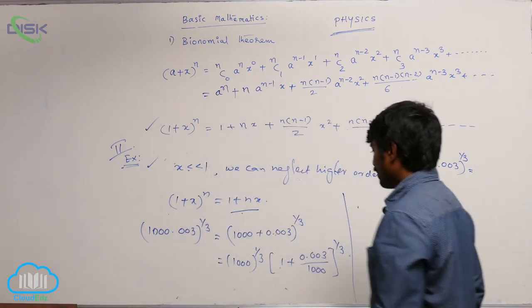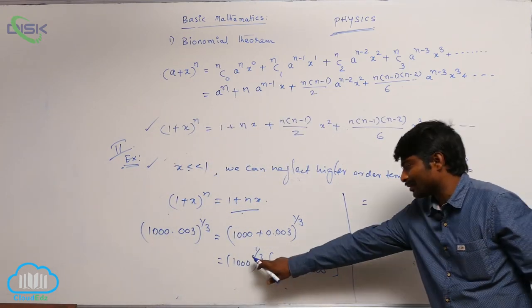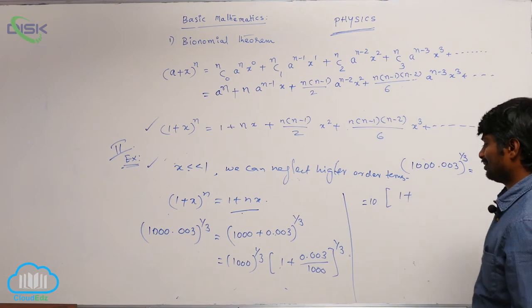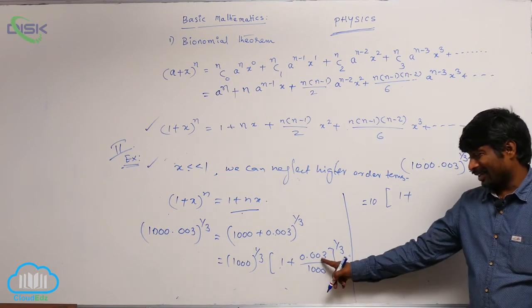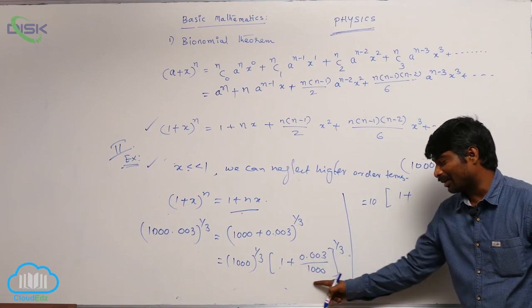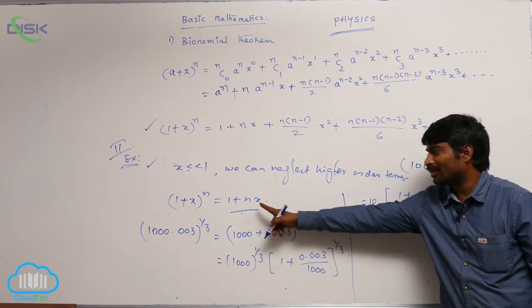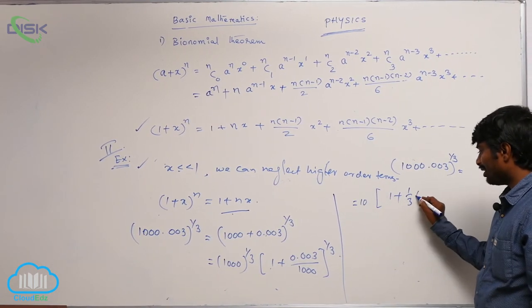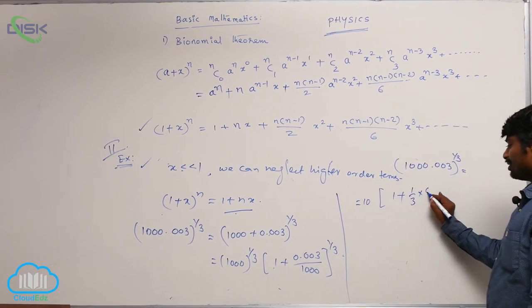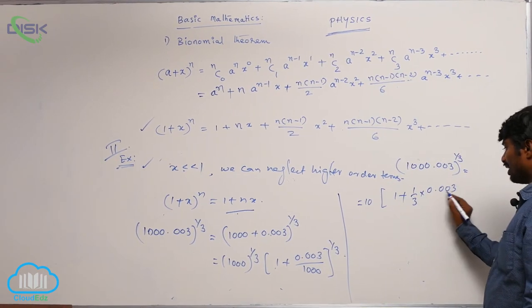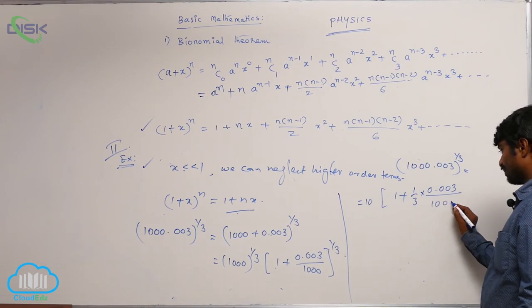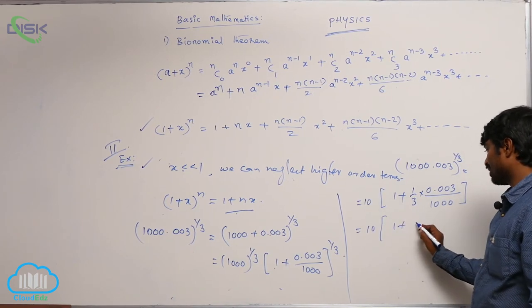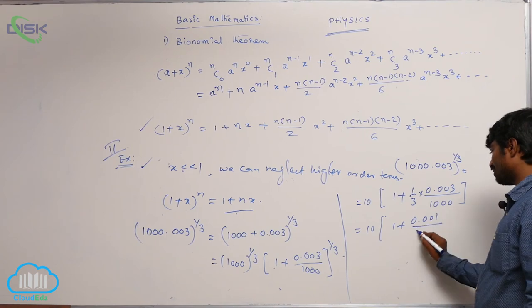And now, 1000 power 1 by 3 is 10 into 1 plus, this value is very much less. So, x is very much less than 1, that's why I can write 1 plus nx, where n is 1 by 3. 1 plus n is 1 by 3 into x is this total term, 0.003 by 1000.